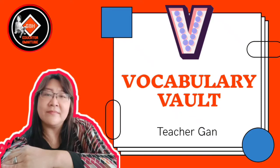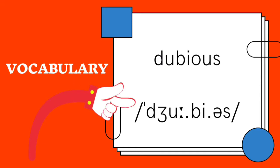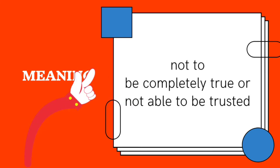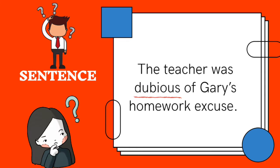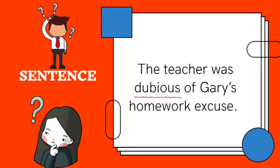Vocabulary Vault. Vocabulary: dubious. Meaning: not to be completely true or not able to be trusted. Sentence: The teacher was